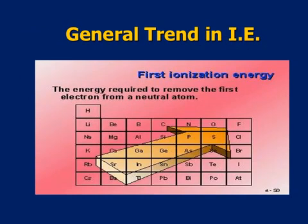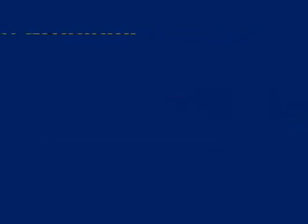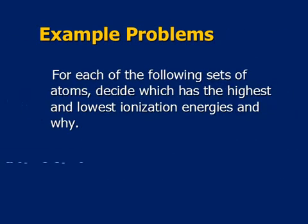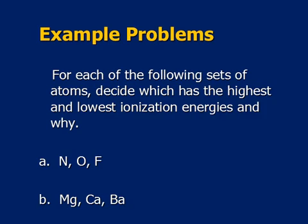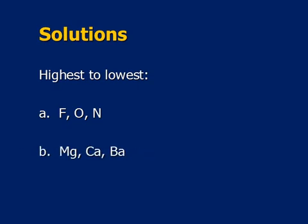Here's a picture representing that general trend. We've got some example problems — you always have to be careful what the problem is asking: highest to lowest or lowest to highest. You can pause the video and decide which element is going to have the highest ionization energy and which is going to require the least energy. The solutions are all based on size — our smallest atoms should take the most energy to remove an electron.